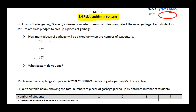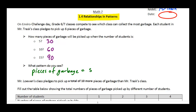Well, if there are five students, then we would pick up a total of 30 pieces of garbage. And if there were 10 students, we would pick up 60 pieces of garbage. And if there were 15 students, we would pick up 90 pieces of garbage. So the pattern we're seeing here is that the total number of pieces of garbage is equal to six times the number of students.